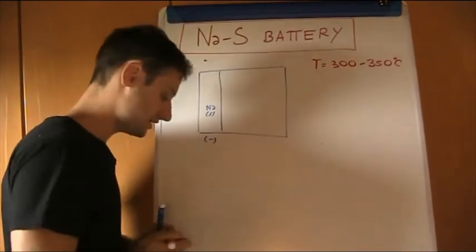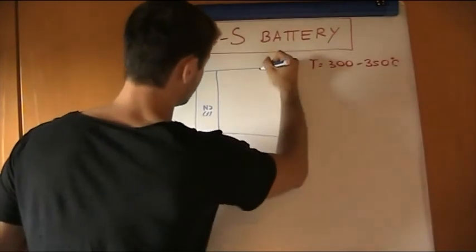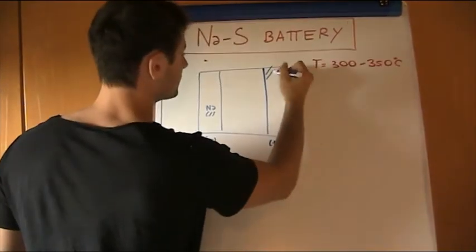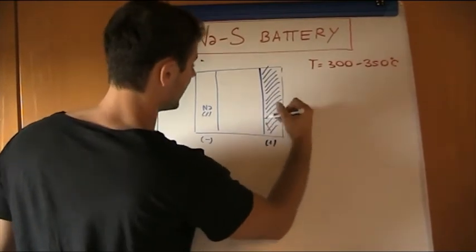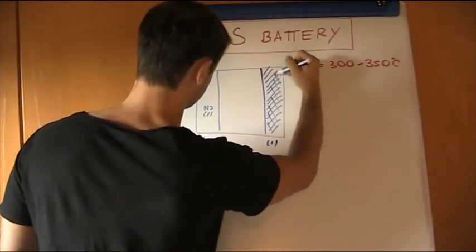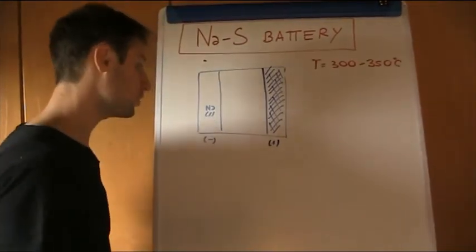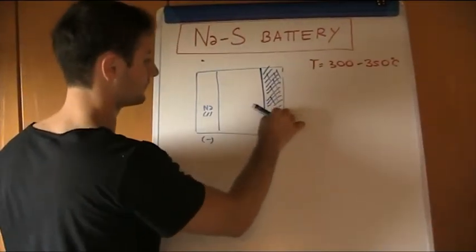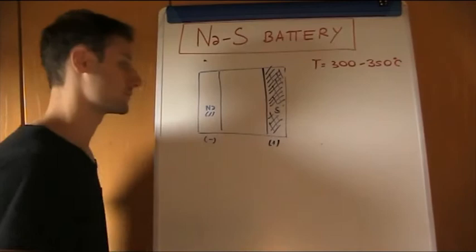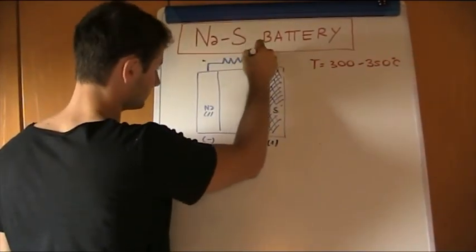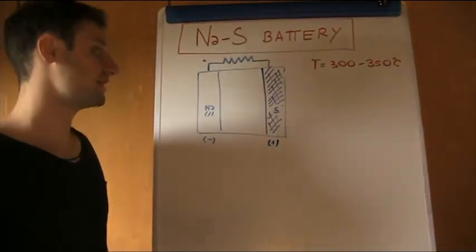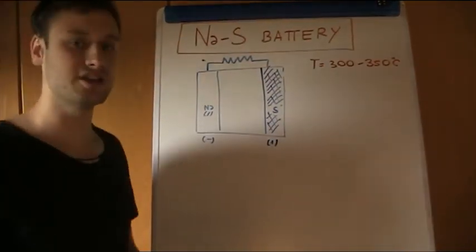Then we have, on the positive electrode, a carbon sponge that is completely impregnated with sulfur. And obviously, we have the external circuit. And we have inside,